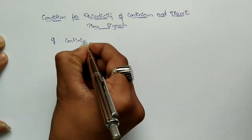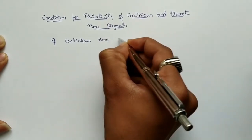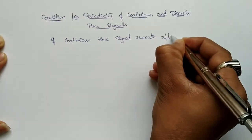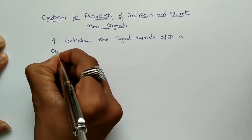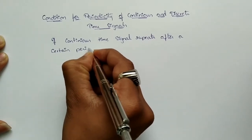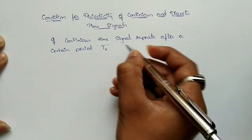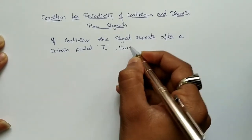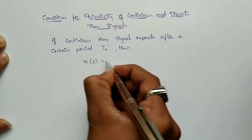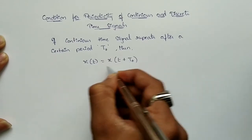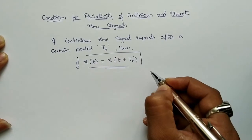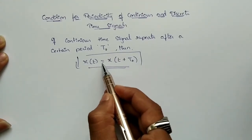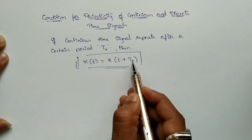If a continuous time signal repeats after a certain period — let it be T₀ — then the condition would be x(t) = x(t + T₀). This is the representation of periodicity for a continuous time signal: the same signal repeats after time T₀.